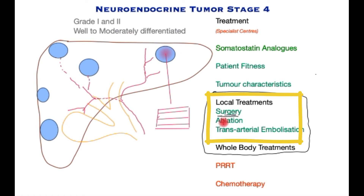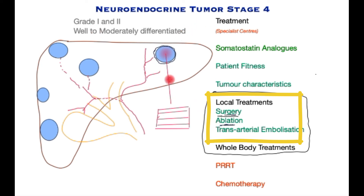Surgery may be supplemented by ablation, and these two can be and often are used together, though sometimes ablation may be used alone. Typically this involves placing a probe into the tumor and increasing its temperature, thus destroying the tumor with heat. Microwave ablation is one effective modality and can be done at the time of surgery or separately under ultrasound or CT scan guidance.